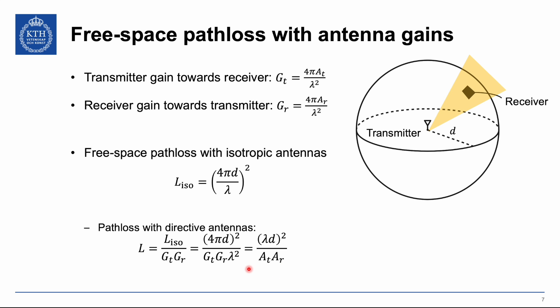This confirms the claim from the first slide: channel quality and path loss depend both on the propagation channel and on the antennas. The distance determines loss over the air, while transmit and receive antenna gains also factor into path loss. We cannot decouple them — we need to make assumptions about distance, wavelength, and transmitter/receiver antennas.